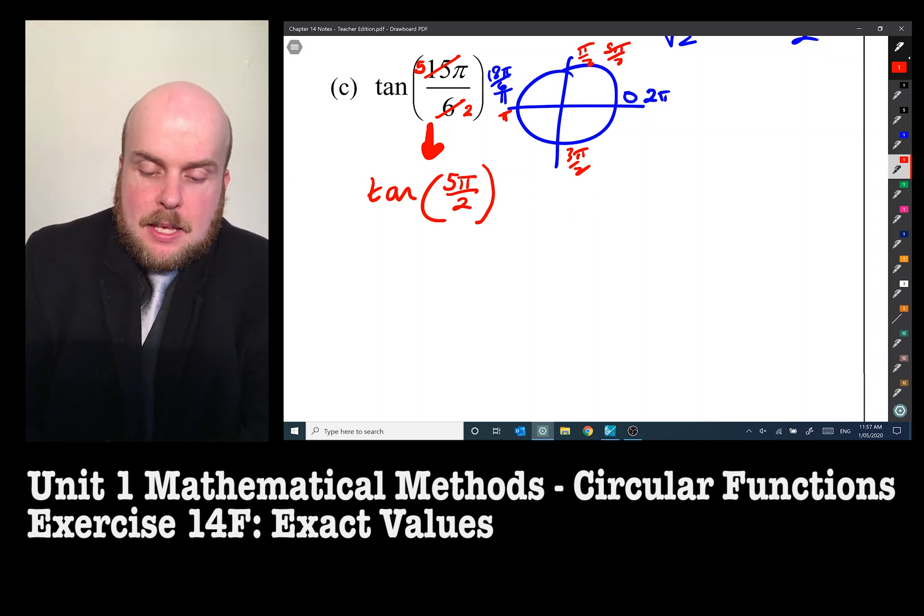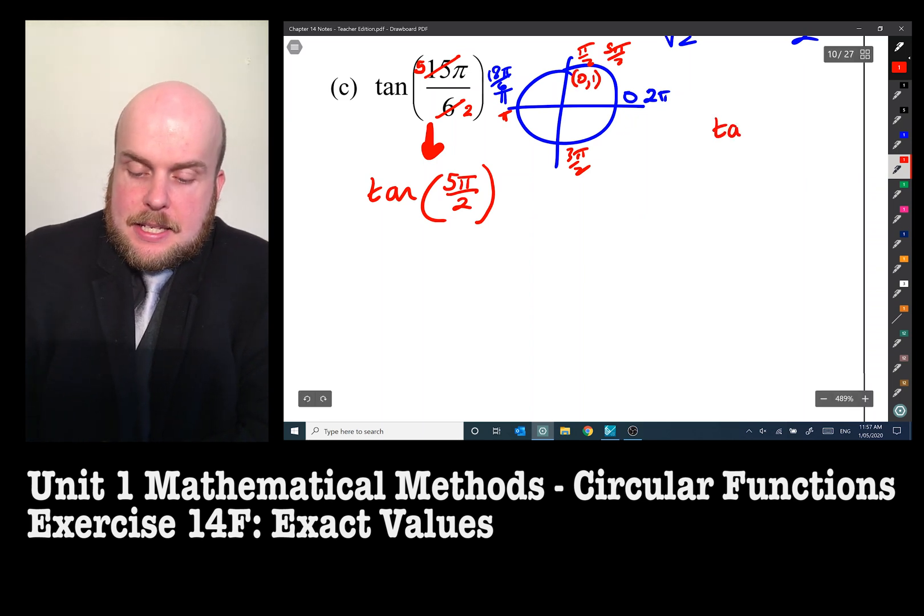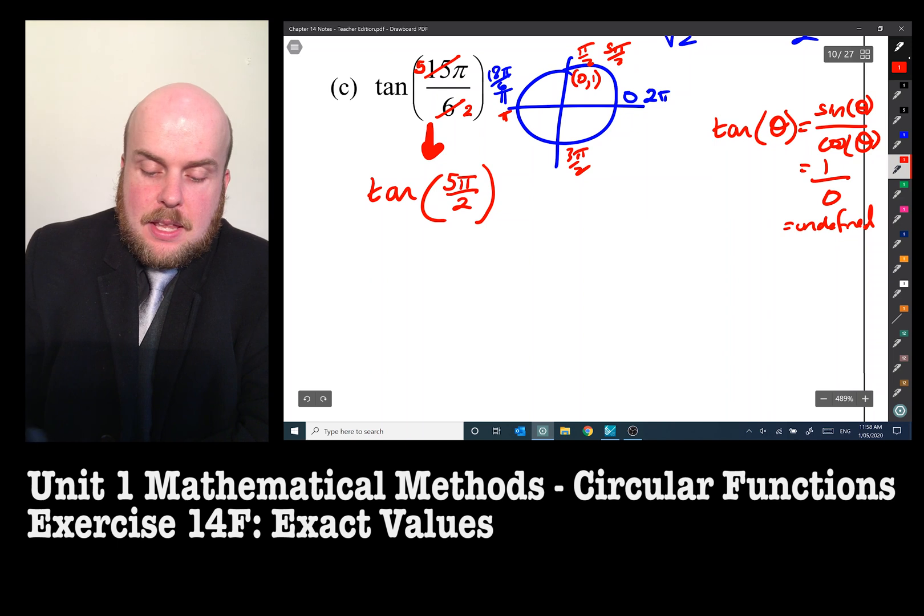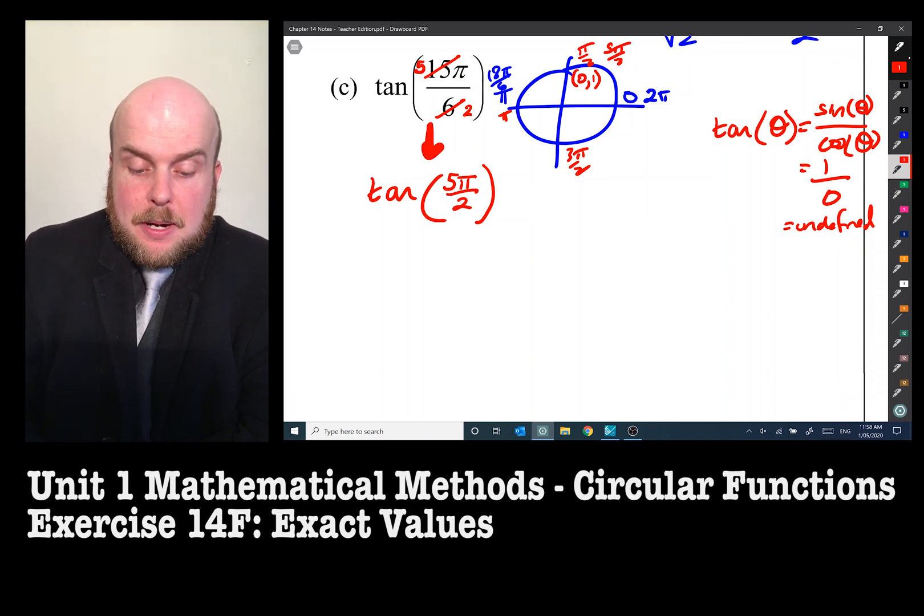So we've got zero, pi on two, pi, three pi on two, two pi. Five pi on two will be up here. So five pi on two, you might remember, has got the coordinate (0, 1). And tan of any angle is equal to sine of the angle over cos of the angle, which would be equal to one over zero, which is undefined. So therefore, tan of five pi on two is undefined.